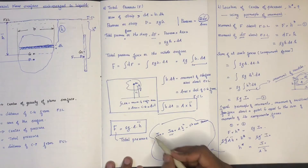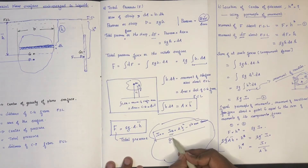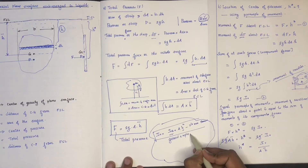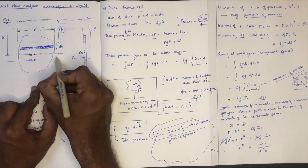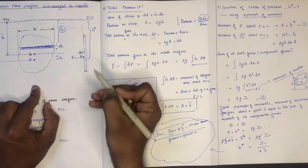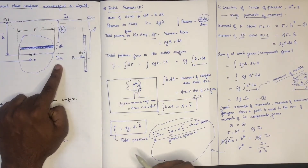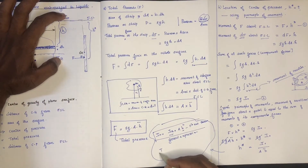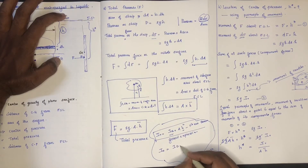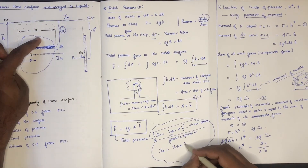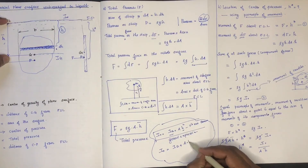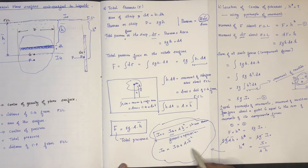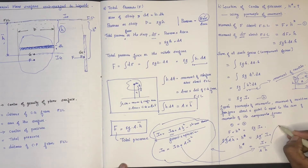This is the general expression. Here we have IG. From the free surface of liquid, I₀ is equal to IG plus A into h-bar squared. This is the general equation.